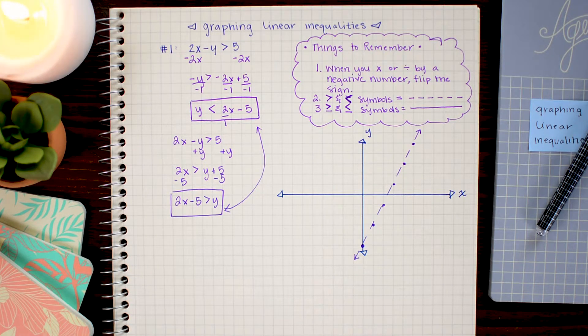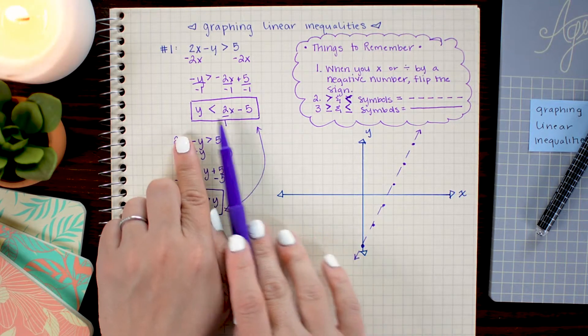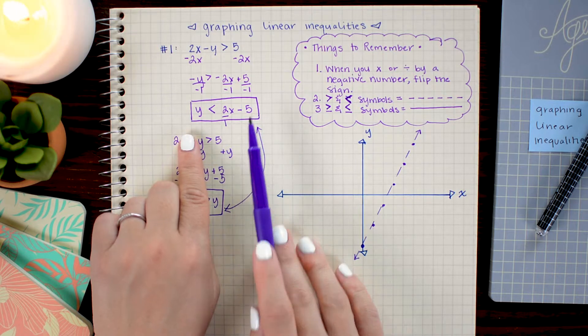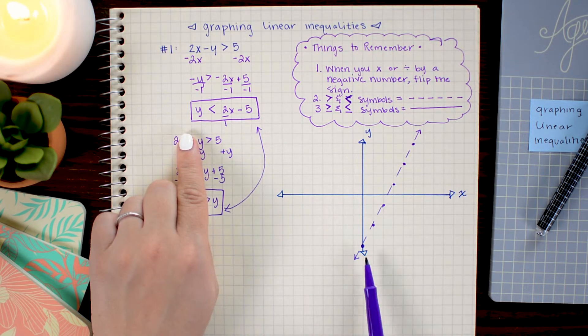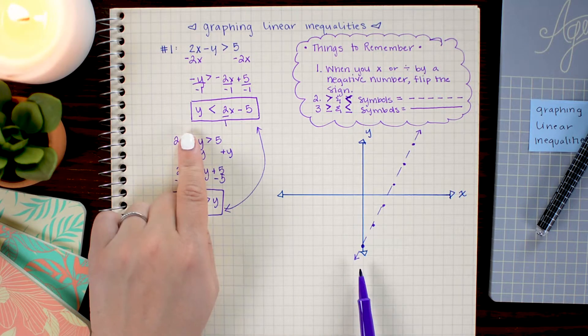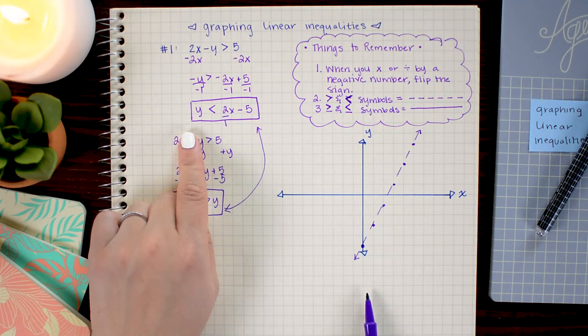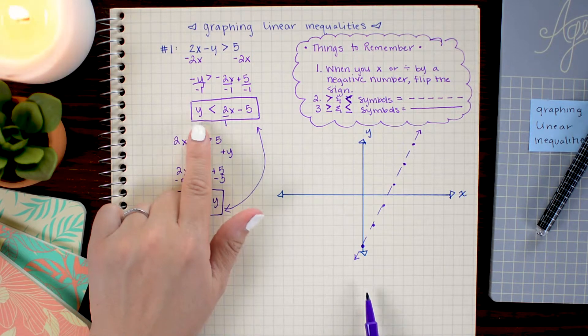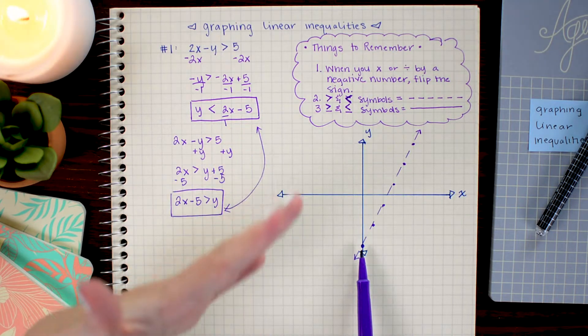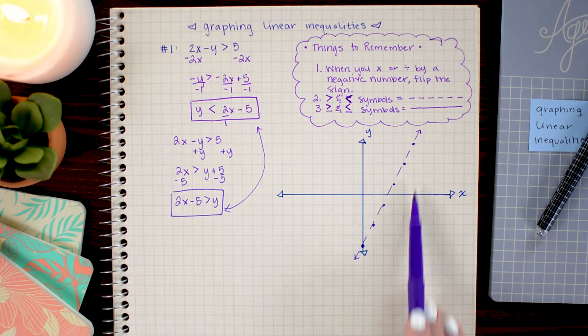And the last part here is to shade the area that does satisfy our equation. So our equation says that y is less than our line. So when we look at our x, y coordinate, we notice that the y axis is the vertical axis. And it goes up to positive numbers and down towards negative numbers. So if I want y values that are smaller than our line, then I want things that are underneath the line. So I'm going to shade this portion right here.